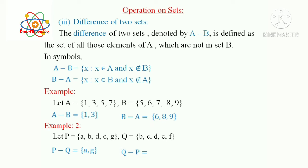In the case of Q−P, delete the common elements of P and Q — that is B, D, E — from Q. We get {C, F}. That is, Q−P = {C, F}.